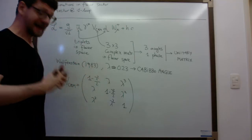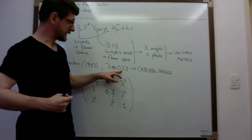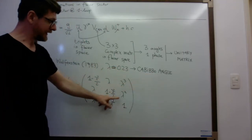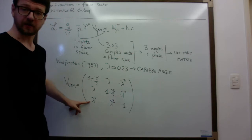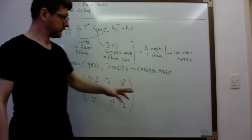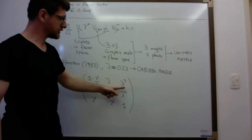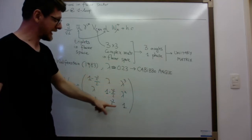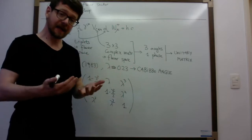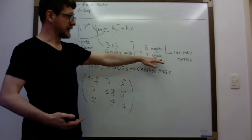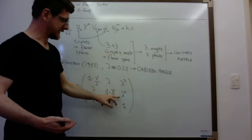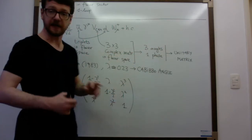Another thing I want to tell you is that this Cabibbo angle is chosen to be real, and these order-one factors are actually complex, because they need to accommodate the phase somehow. The trick here is that you use the Cabibbo angle lambda as an expansion parameter, and then you put the phase and the other two parameters as order-one factors.